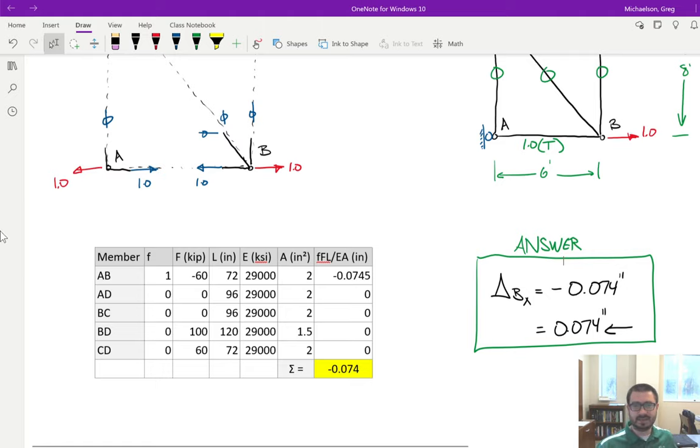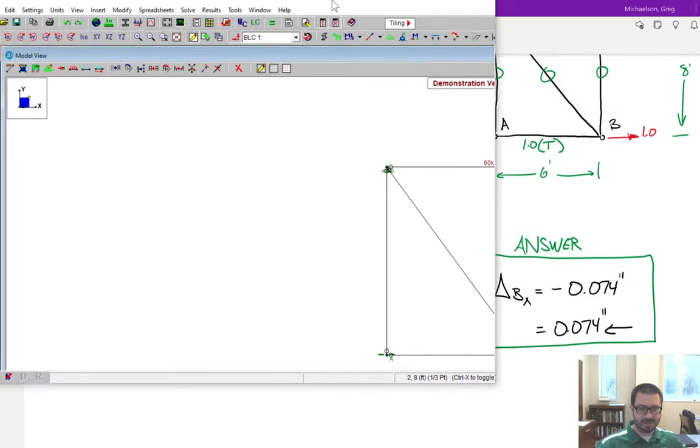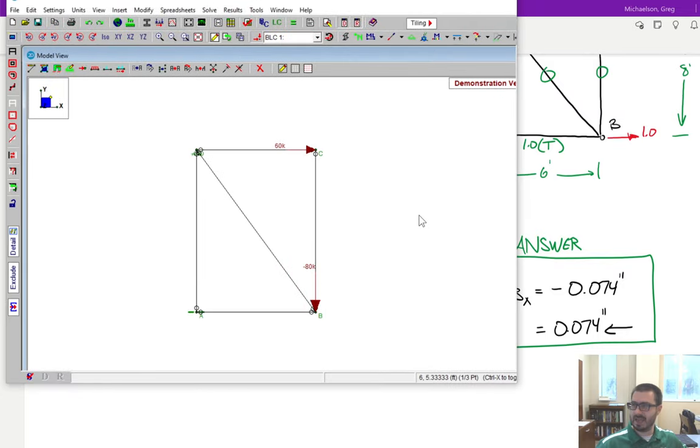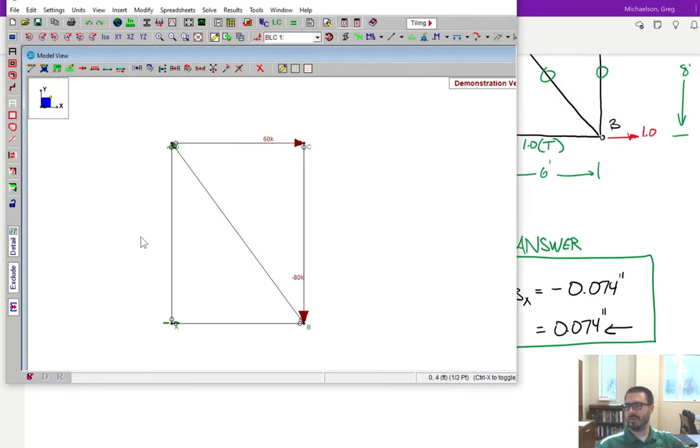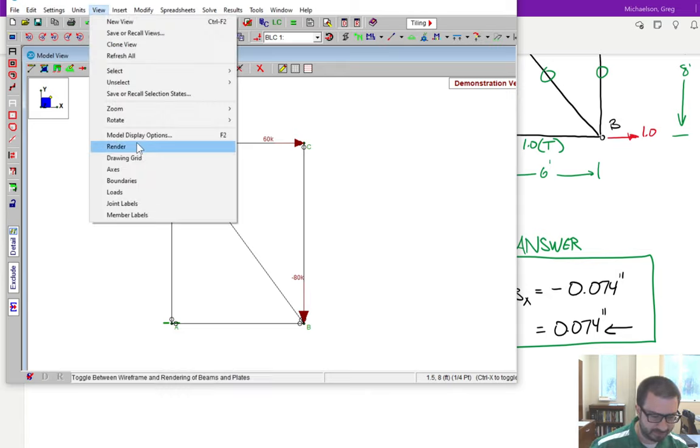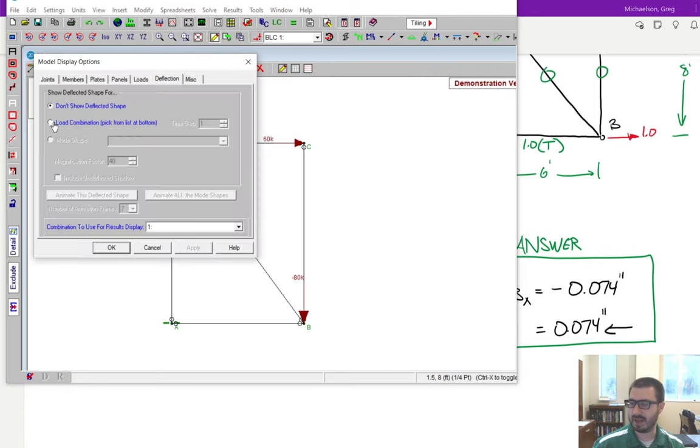Now I'm going to give you a little taste of things to come for later. Later on, we will explore how to use structural analysis software to analyze a truss. This is a structural analysis software package called RESA. And here is the truss in question. So what I've done is I've modeled this truss using the modeling techniques we'll discuss later on in the semester. But one of the things that this software allows me to do is I get to actually view what the deflected shape looks like.